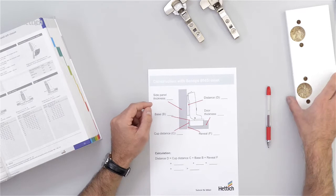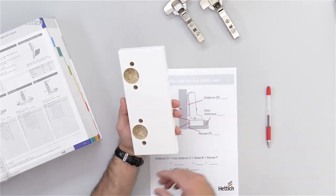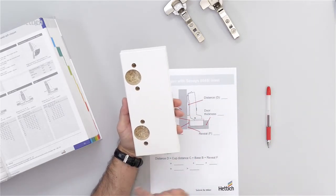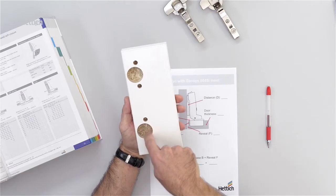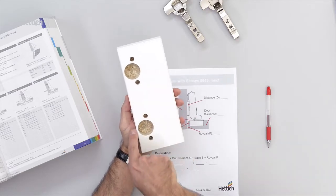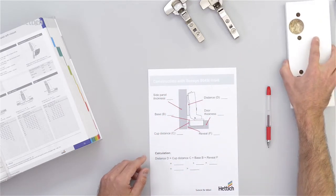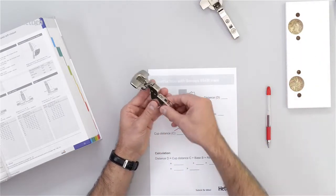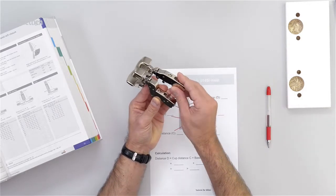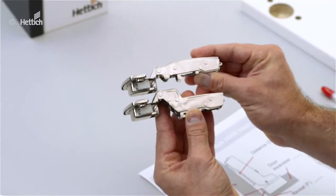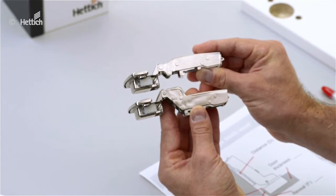The values show the cup distance C which is the distance between the cup hole drilling and the edge of the door, and also the base B which is the value for the different shape of the hinge arm.